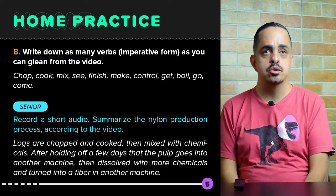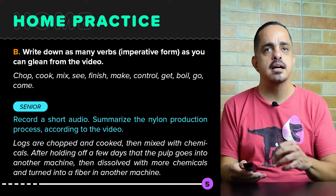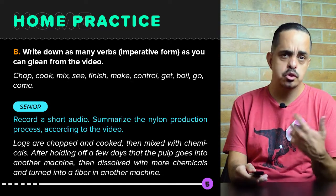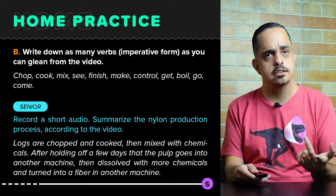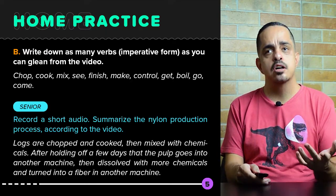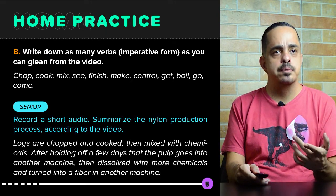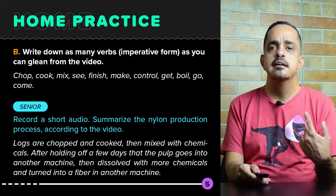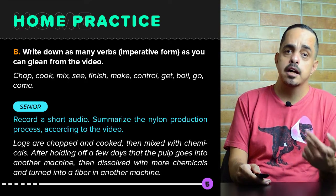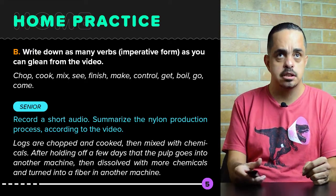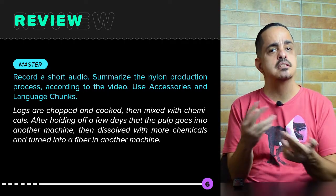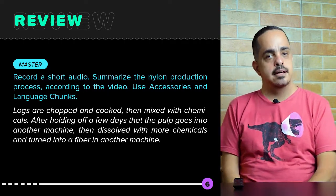Seniors had to record an audio summarizing the nylon production process according to the video. Summarizing it: logs are chopped and cooked, then mixed with chemicals. After holding off a few days, the pulp goes into another machine, then it's dissolved with more chemicals and turned into a fiber in a third machine. Masters had to do the same, but also using accessories and language chunks.